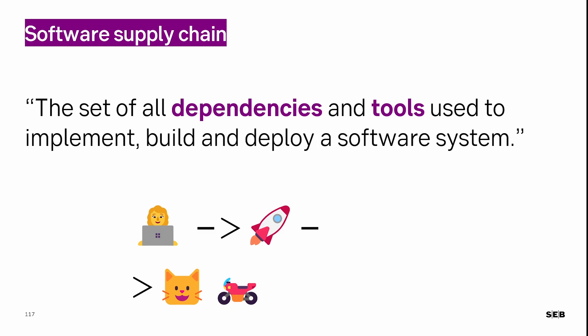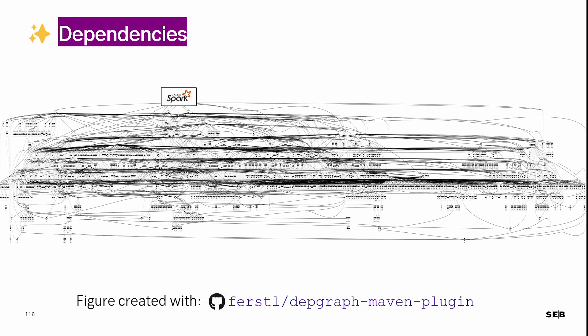This is what we talk about when we mention the software supply chain: it is the set of all dependencies and tools necessary to implement, deploy, and deliver value to customers. The complexity of these dependencies is a major issue. The figure shows the dependency tree of a popular project — the core module of Apache Spark, a JVM framework for big data analysis. The dependency tree is extremely complex — there are actually more than 500 dependencies.